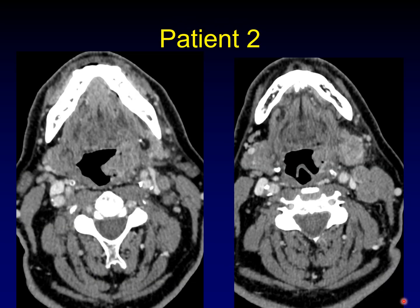Here are some additional images on patient number two. These are both from the same time, both from the presentation scan. But this newer image on the right is a little further inferior down the neck. Does that help you? What do you think is going on with patient one and patient two?